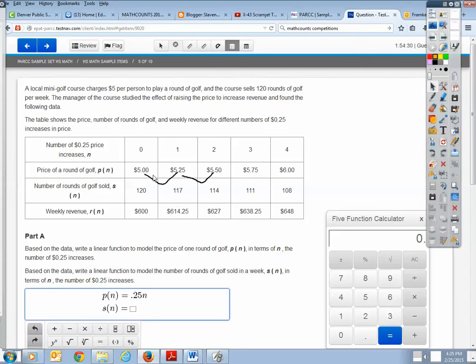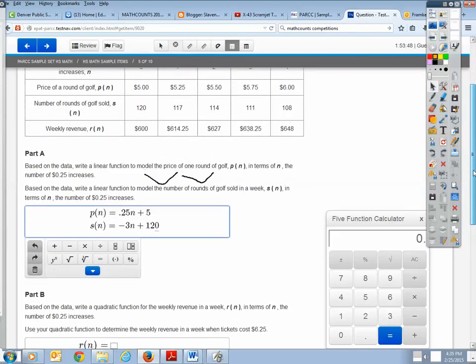And then I have my y-intercept, which would just be 5 because when I have no increases, I have a cost of $5 plus 5. Then I also need to have, based on the data, write a linear function to model the number of rounds of golf sold in terms of N. Well, here it's a little different. Here I notice I'm going down by 3 every time. So that means I have a negative slope. I have a slope of negative 3 because that means I'm losing 3 rounds of golf for every $0.25 increase. And so I still have my N, but in this case I am starting with 120 players with my typical cost of $5. So I'm successful with this one.